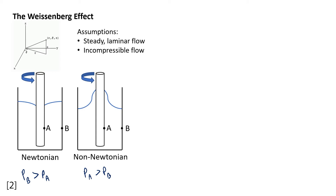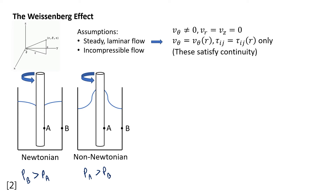Let's take a look at the math. We're going to start with our assumptions. For this system, we're going to assume that it is a steady laminar flow and the flow is incompressible. We're also going to be using cylindrical coordinates to describe the system because those are the coordinates that best work for this geometry. From these assumptions, we can make a few other statements. The only velocity in the system is the velocity in the angular direction, so we only have that angular velocity. The velocity in the radial direction and the velocity in the z direction are both zero. Additionally, that angular velocity is only a function of the radius, and the stress tensor tau_ij is only a function of the radius as well. These satisfy the continuity equation, which is just conservation of mass.